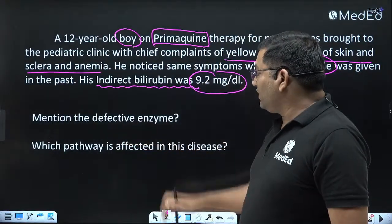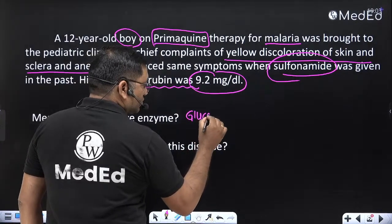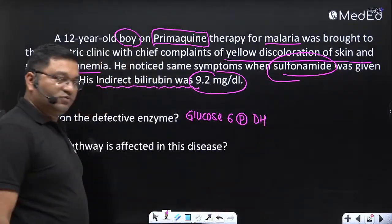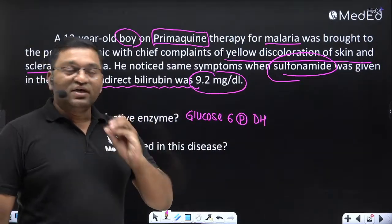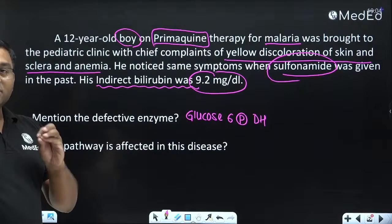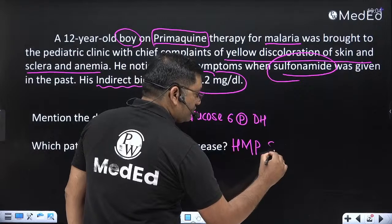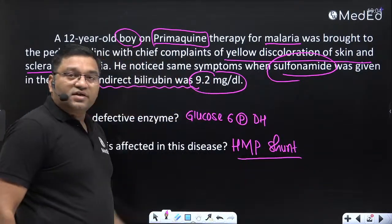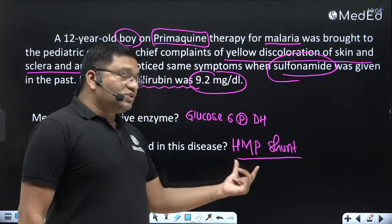The defective enzyme is glucose-6-phosphate dehydrogenase. The pathway affected is the HMP shunt — hexose monophosphate shunt. It is also known as the pentose phosphate pathway. It is called a shunt pathway because it is an alternative pathway for oxidation of glucose into CO2.